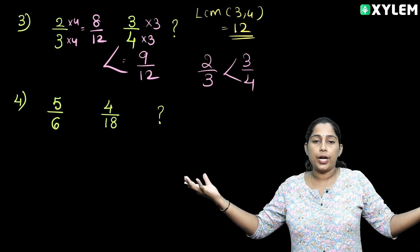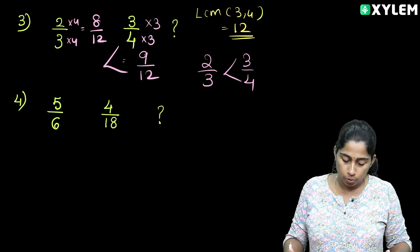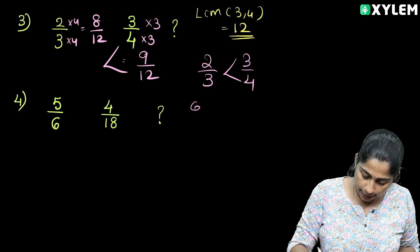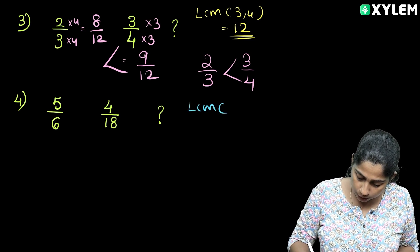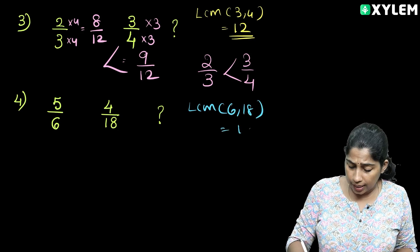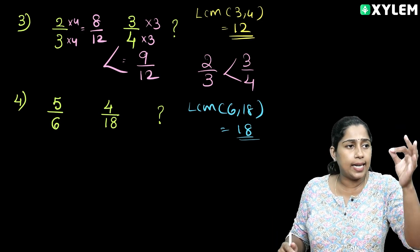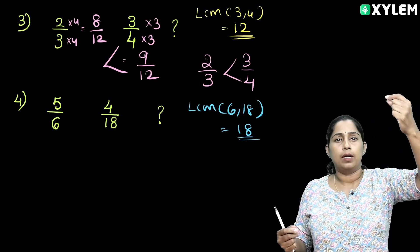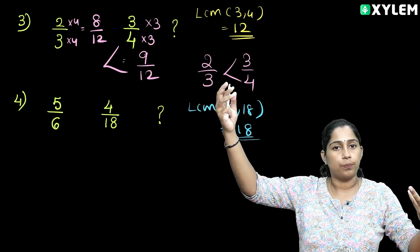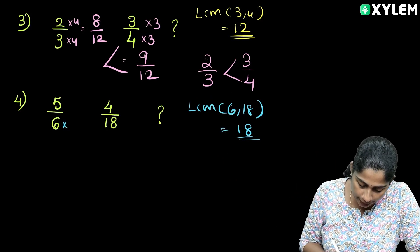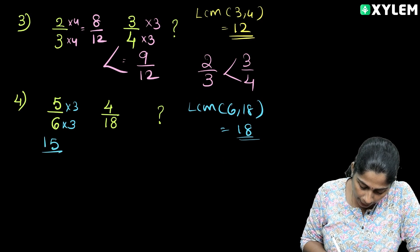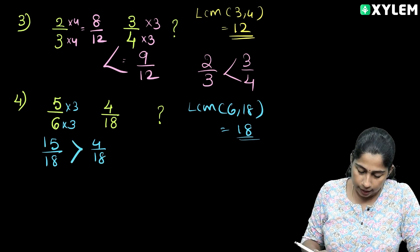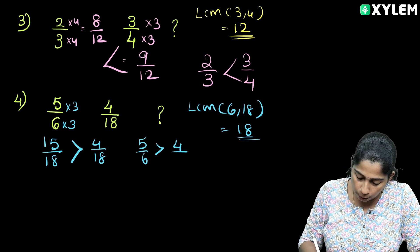5 by 6 and 4 by 18 — this denominator is different. Then we have 6 and 18. LCM is easy. 6 and 18: their LCM is 18. Six times three is 18. Then we multiply this denominator by 3, giving 15 by 18. This is 4 by 18. Therefore 5 by 6 is bigger than 4 by 18.